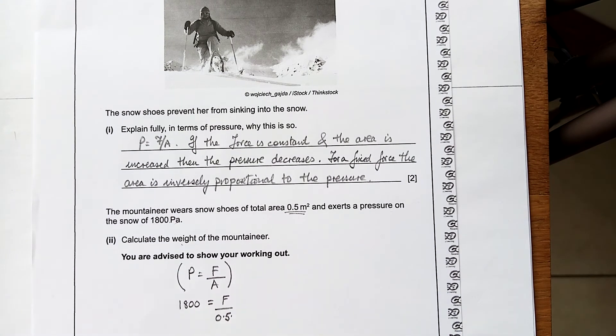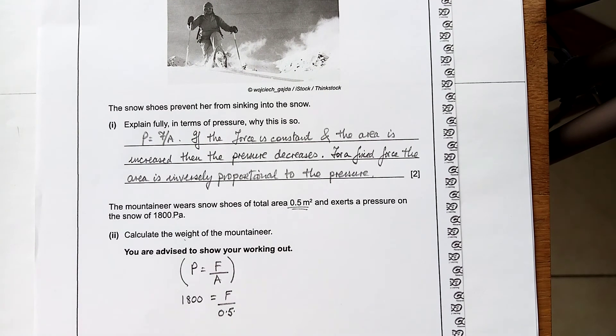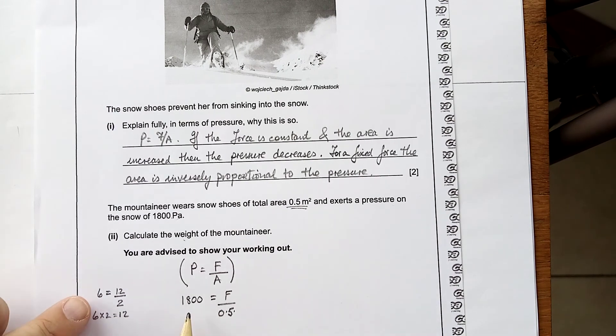Now, there are people in our midst that will panic once they see this. But, don't panic. Say 6 is equal to 12 divided by 2. How do I rearrange that to get 12 equals something? I want F equals something. So, 6 by 2 equals 12. Now, that's hardly a scary event. So, 1,800 by 0.5 is equal to F.